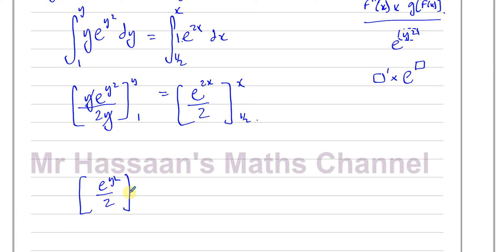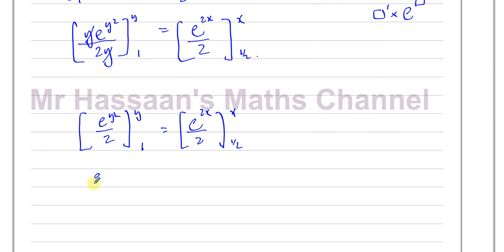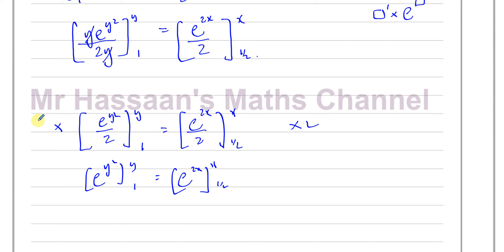Simplifying: we have e^(y²)/2 with limits y and 1, and e^(2x)/2 with limits x and 1/2. Multiplying both sides by 2 to clear the denominators gives e^(y²) with limits y and 1, and e^(2x) with limits x and 1/2. Substituting the limits: e^(y²) − e^(1²) = e^(y²) − e on the left, and e^(2x) − e^(2·(1/2)) = e^(2x) − e^1 on the right.